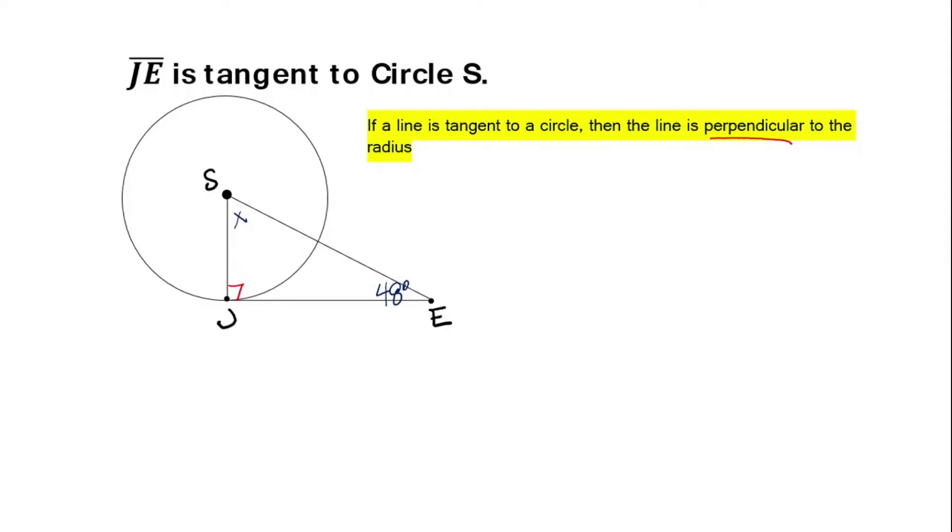Let's say that the measure of angle E is 48 and we need to solve for x. Well, we've got a big right triangle right here, and the sum of all the angles in a triangle is 180 degrees.